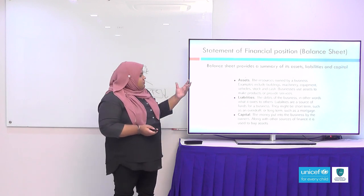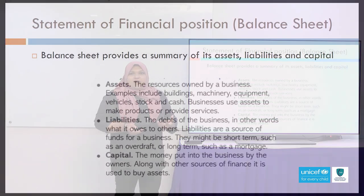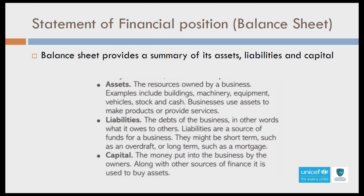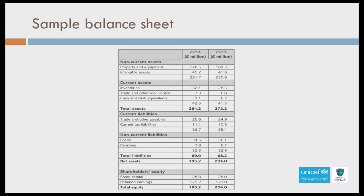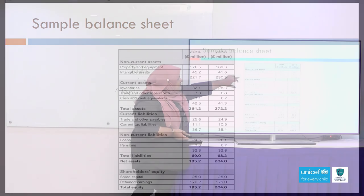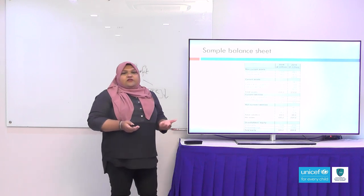This is the balance sheet, where all the data for liquidity calculations comes from. The balance sheet provides a summary of a business's assets, liabilities, and capital. Assets refer to things owned by a business — like buildings, machinery, and equipment. Liabilities are the debts of the business, and capital refers to investments by the owner. In the question, all you need to look for is the current assets, current liabilities, and inventories.